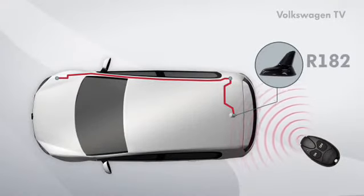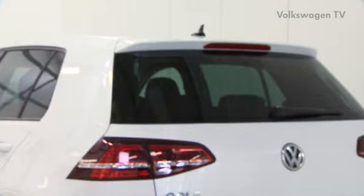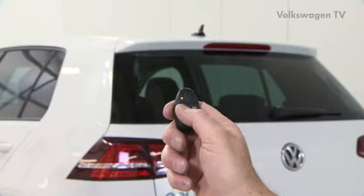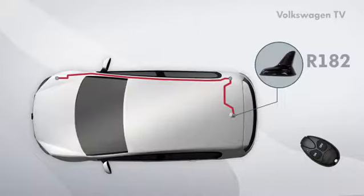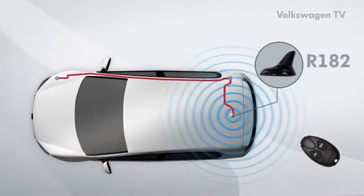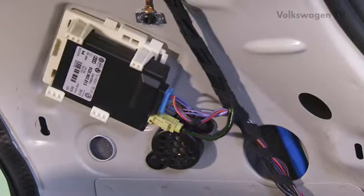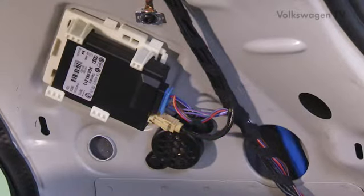In the Golf 7, the R182 aerial receives signals from the remote control. It's also used to send feedback to the remote control. The aerial is connected via a cable to the R149 radio receiver for the auxiliary heater.